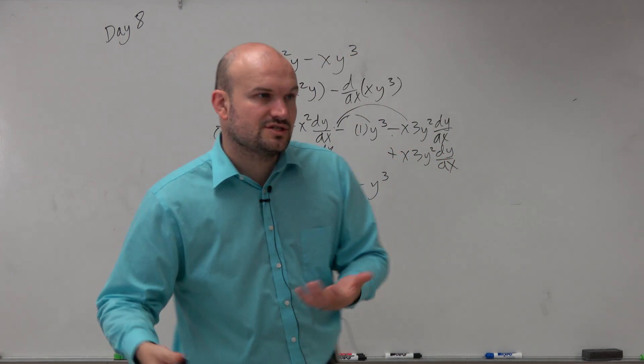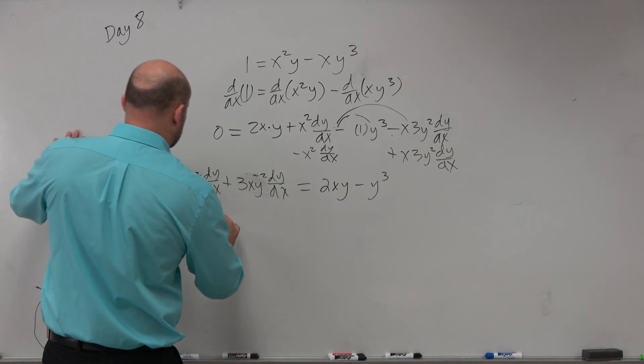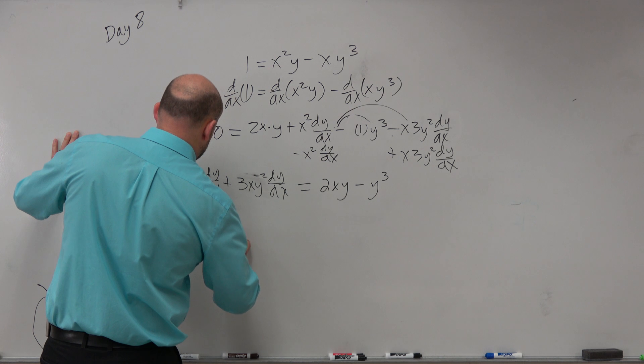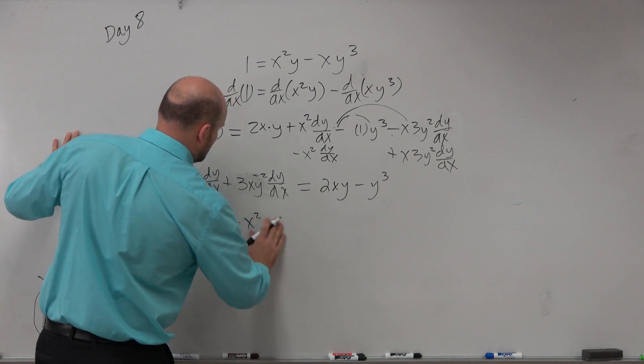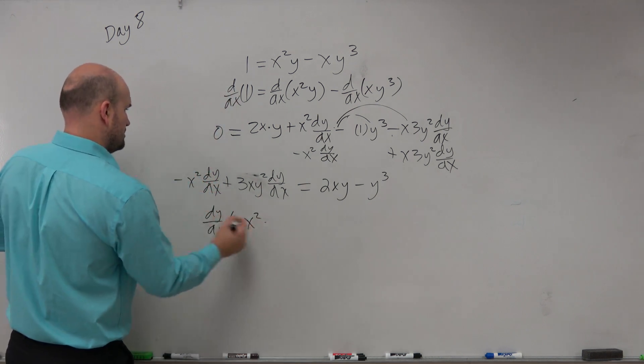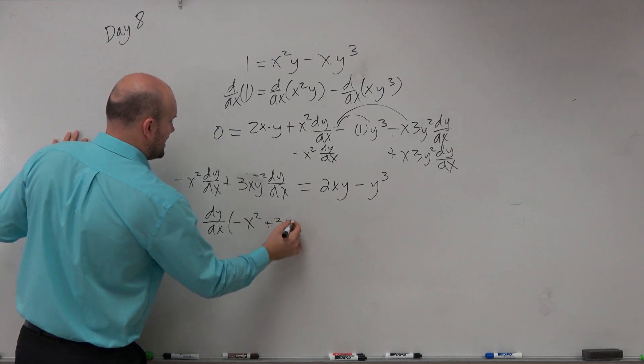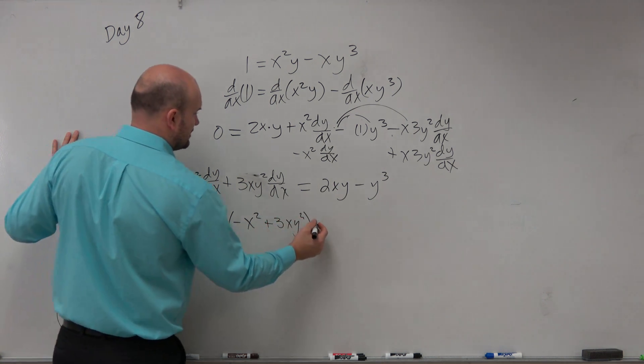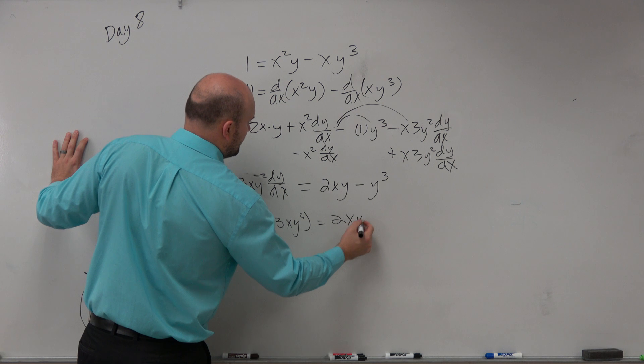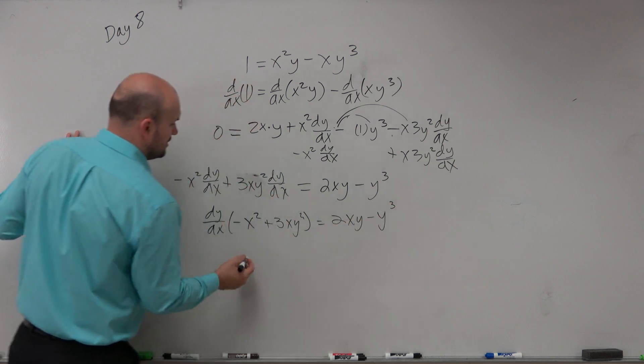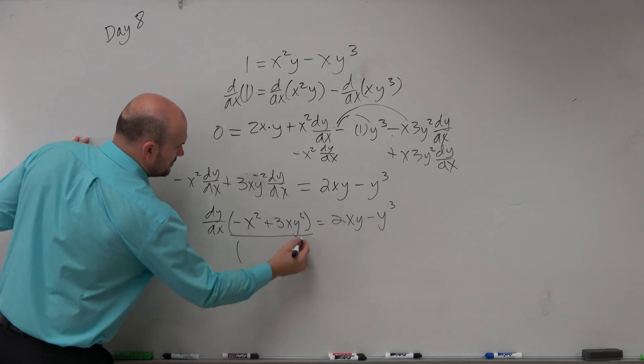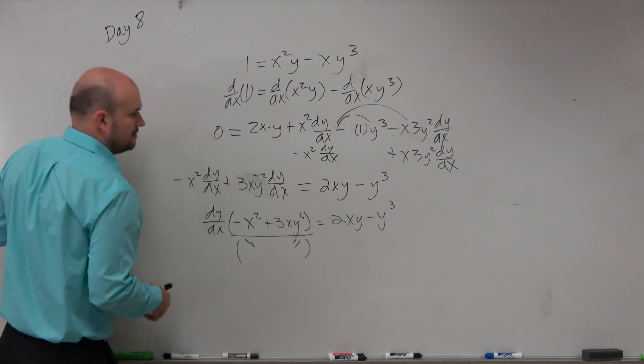and now we just need to solve. So again, we're going to factor out the dy/dx. So I get dy/dx times (-x² + 3xy²) equals 2xy - y³. I'm now going to divide by that.